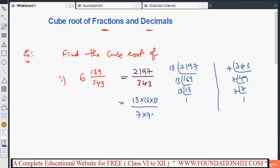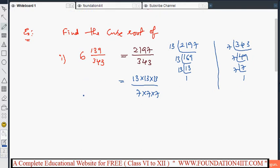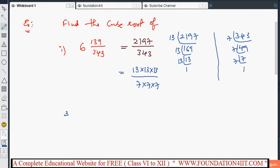Whenever you want to find cube root of this, cube root of 13 into 13 into 13, that is 13³ by 7³. Cube root of 13/7 whole to the power 3. The power 3, cube and cube root cancel, then that is 13/7. So 13/7 is the answer for 6 139/343.